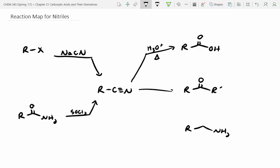And then how do we go to a ketone? That was our new method, a Grignard reagent. So R prime MgX, followed by a water workup.